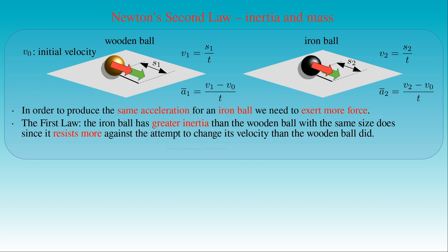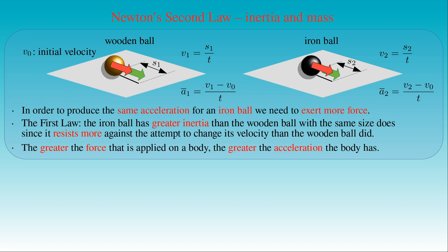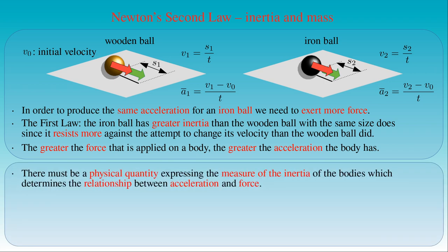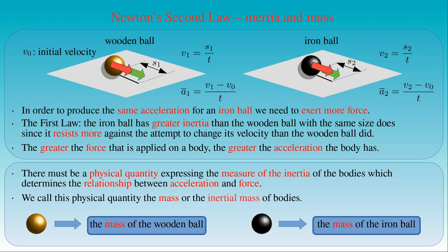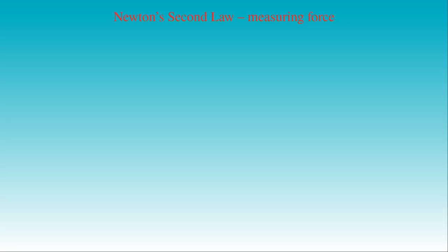We call this physical quantity the mass or the inertial mass of bodies. Inertia and mass are associated with both the wooden ball and the iron ball. The mass of the iron ball is greater than that of the wooden ball — the iron ball is heavier than the wooden ball. In these experiments we compare the amount of force applied to the balls when pushing them. Instead of using our sensory perception of the force exerted by our muscles, we can apply a more accurate method to measure force.